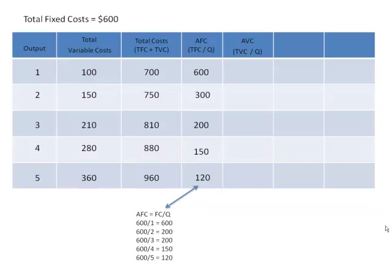Next column, average variable cost. How do we calculate that? We take the total variable cost — that's over in that second column — and we divide that by the number of units produced, Q. So in the first case, we have $100 in total variable cost divided by one unit is $100. In the second case, we have $150 total variable cost divided by two units — that's $75. Next, we have $210 divided by three, $280 divided by four, and $360 divided by five. So I want you to be clear on how we calculate these numbers. What happened to average variable cost? Well, it declined, and it declined, and then it stayed the same, and then at the fifth unit of output it began to increase. What we have described right there is the bottom of that U-shaped average variable cost curve.